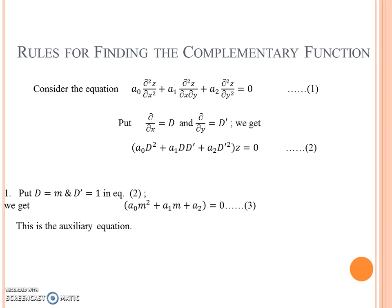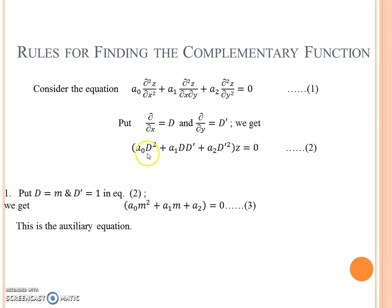Now, rules for finding complementary functions. Consider the second order partial differential equation. We put del/del x equal to D and del/del y equal to D' to get the symbolic form. By multiplying the nth order D² by z, we get the nth order del²z/del x², and after simplification we again get the original equation.